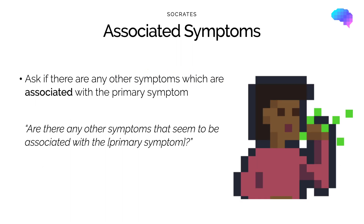Asking about Associated symptoms is really important and this is part of SOCRATES. We want to establish if the patient has any other symptoms aside from the ones which they initially presented with. If the patient does have other symptoms, we may want to explore these in more detail.